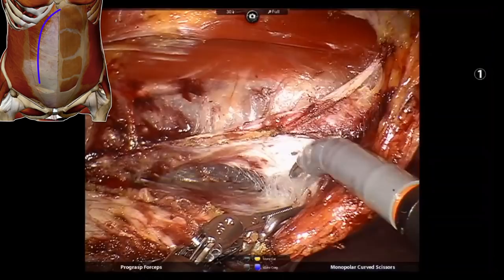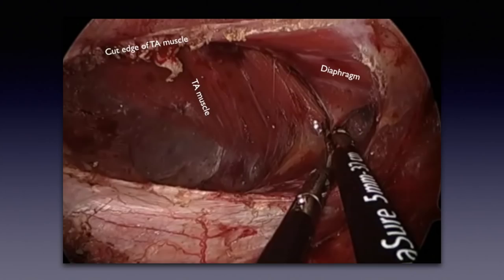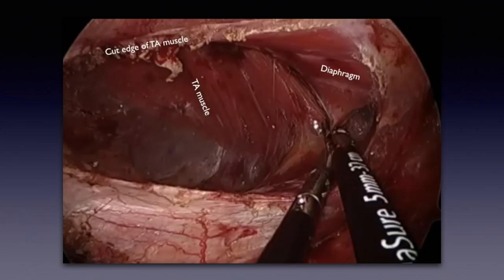As we go above the costal margin, you'll now see the fibers of the diaphragm. It's very interesting to see this intimate relationship between the fibers of the diaphragm and the transversus abdominis muscle — their fibers travel essentially perpendicular to each other. The anatomical landmark separating the two muscles is the lower rib, the subcostal margin. Below the costal margin, the transversus abdominis muscle travels essentially horizontally, while the diaphragm fibers above the subcostal margin travel vertically, creating almost a 90-degree relationship between the two muscle groups.